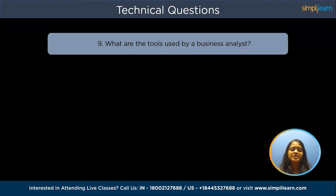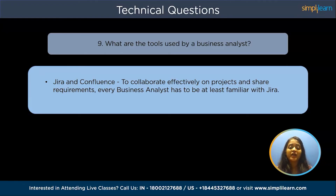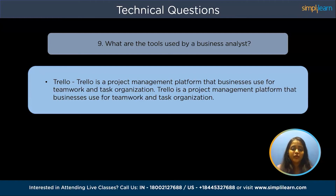What are the tools used by business analysts? Jira and Confluence are very effective collaboration tools. Every business analyst has to be at least familiar with Jira to collaborate effectively on projects and share requirements. By using platforms like Jira and Confluence, all business stakeholders may engage with various teams and view the status of their project.